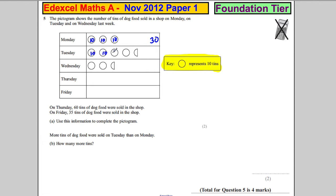On Tuesday, we have 10, 10, 10, 10 and half a circle, which must be 5. So that's 45. And on Wednesday, we have 10, 10 and 5, which must be 25.